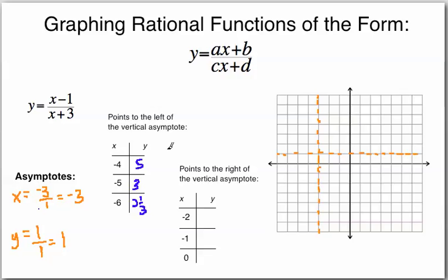So these are our y values for those x values. Let's go ahead and plot them. We've got the point negative 4, positive 5 — that's over here and up 5. Then negative 5, positive 3 — that's over 5 and up 3. And then negative 6, 2 and 1 third — we put a point just above the 2 line.